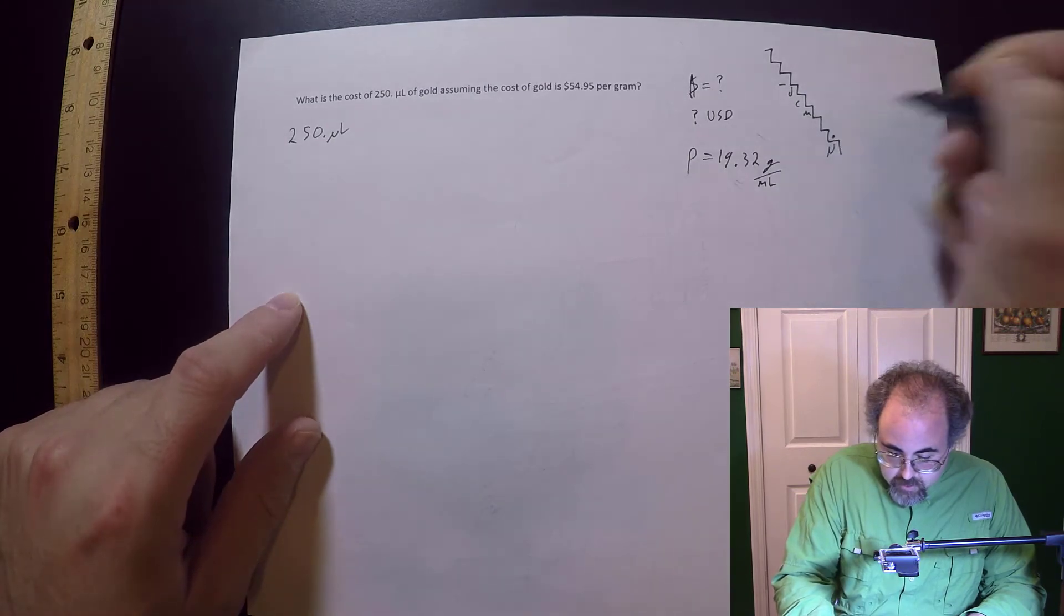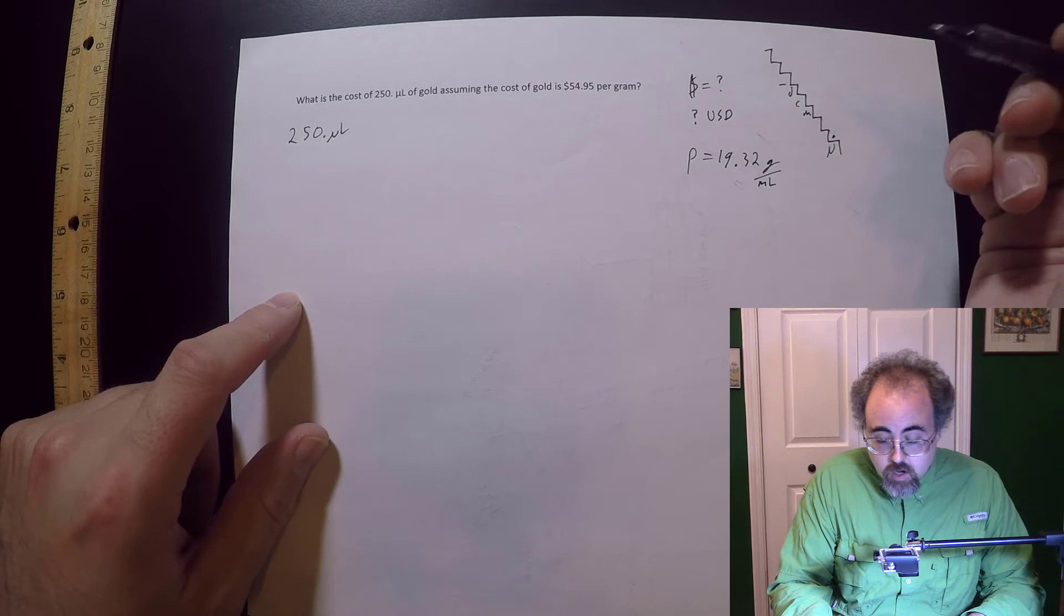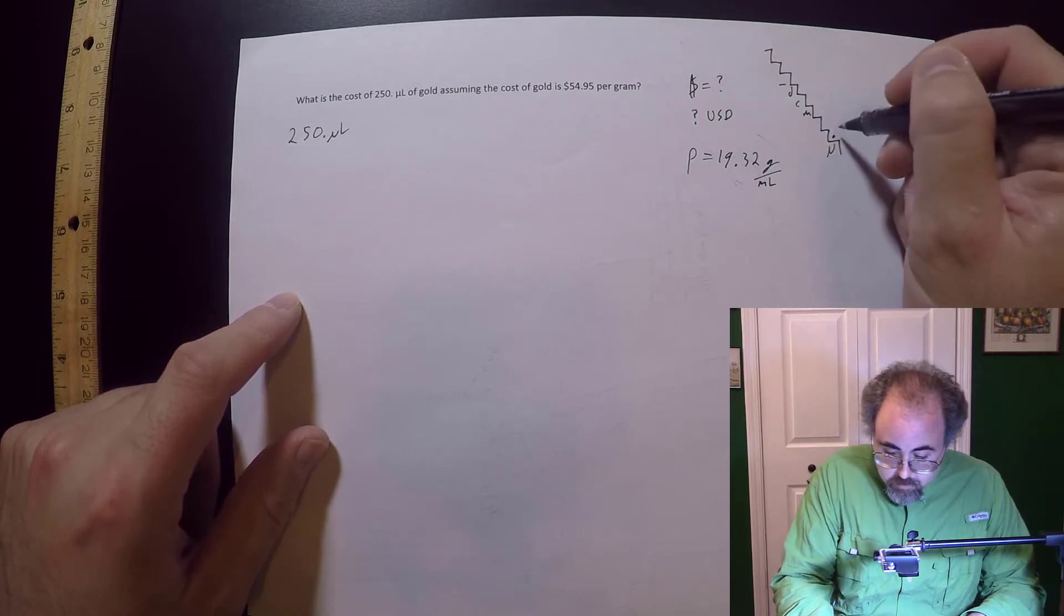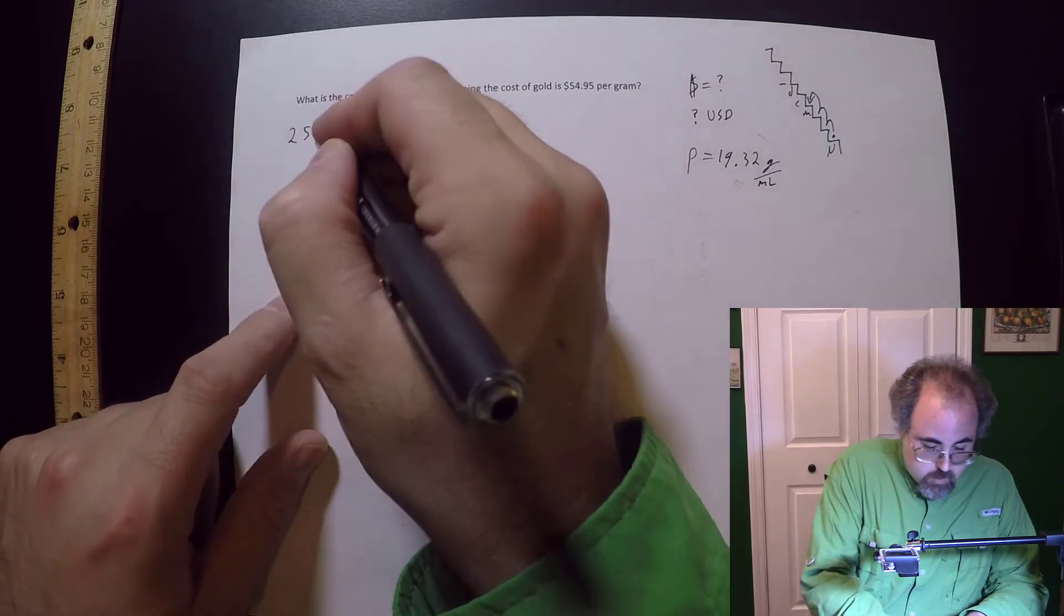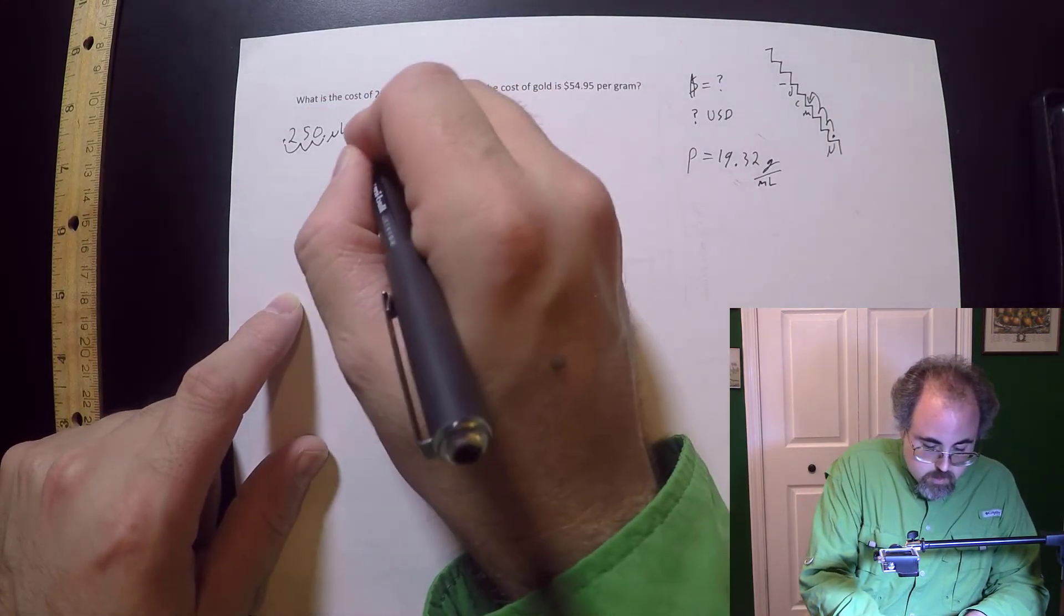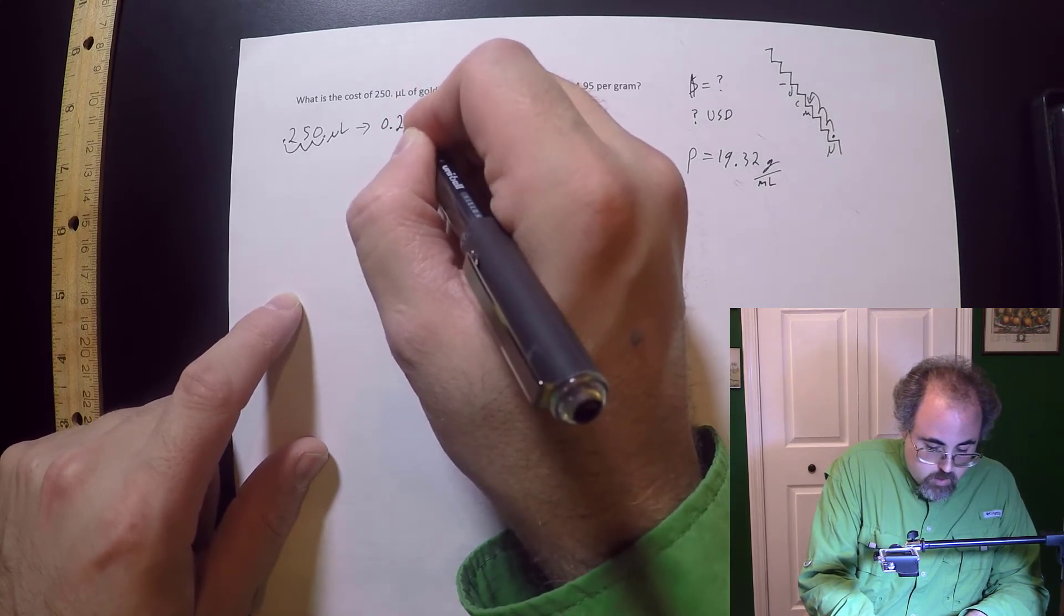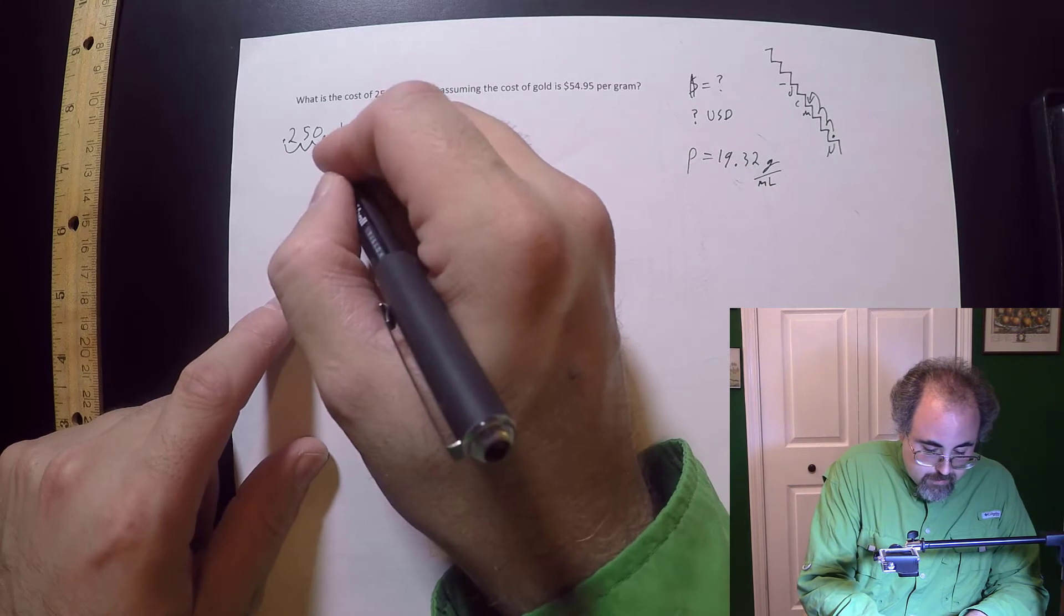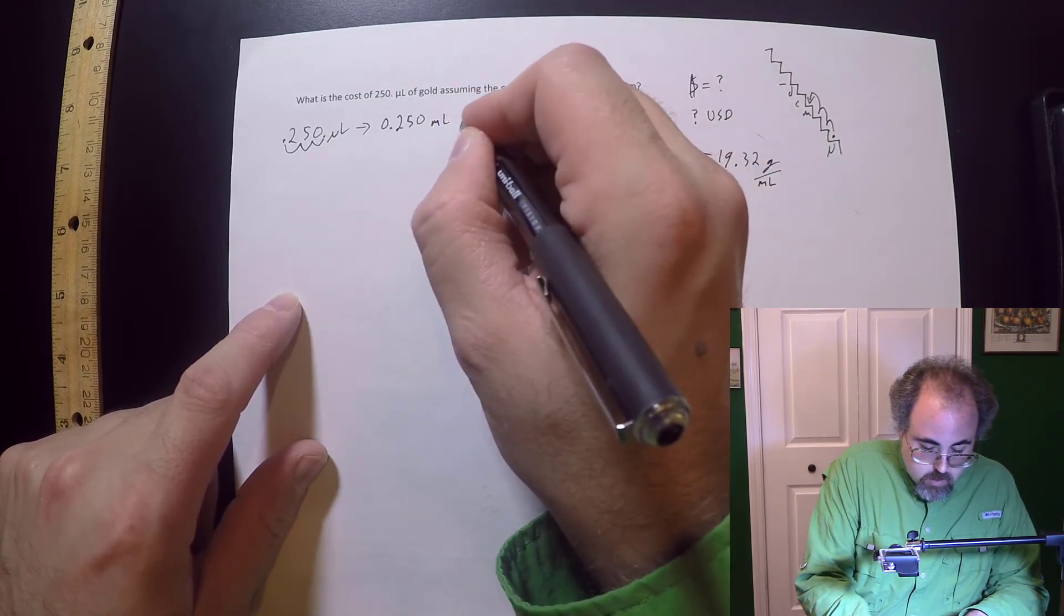So I'm going to put that here. You know I want to go to milliliters because my density is using milliliters. So I'm going to go hop, hop, hop. So hop, hop, hop. So now this is going to become 0.250. I'm keeping that zero because the decimal point was there originally. Milliliters of gold.